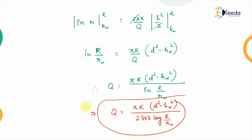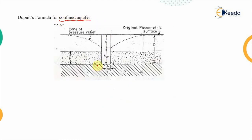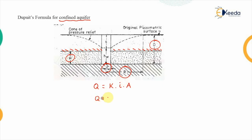Now the Dupuit formula for the confined aquifer. In this case, both sides are impervious. R_w is the radius of the main pumped well, R is the radius of influence, D is the total depth, and H is the depth of the confined aquifer. Applying Darcy's law: Q = K × (dH/dR) × 2πR × H. In the confined aquifer, the height H becomes constant because the height of water in the main well is always greater than the height of the aquifer.